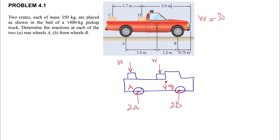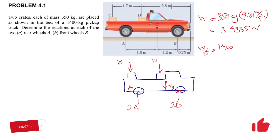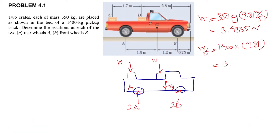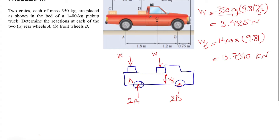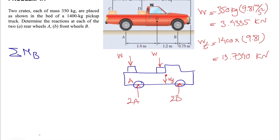Now we find the weights. The weight of each crate is 350 kilograms times 9.81 m/s², giving us 3.4335 kilonewtons. For the truck, 1400 kilograms times 9.81 m/s² gives us 13.734 kilonewtons. Now that we have these values, we can start with our equilibrium equations.